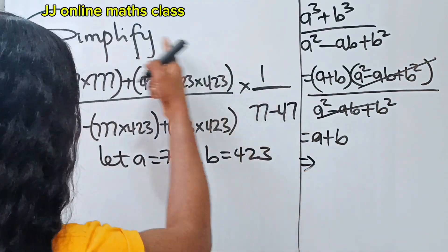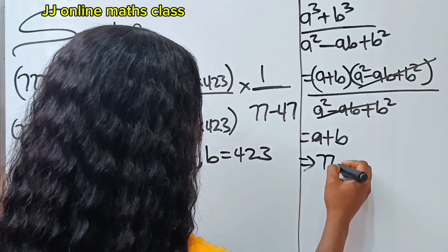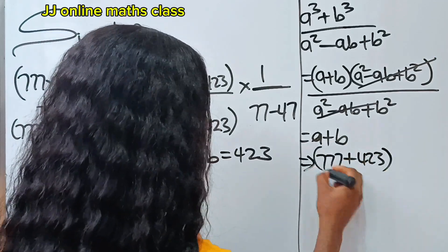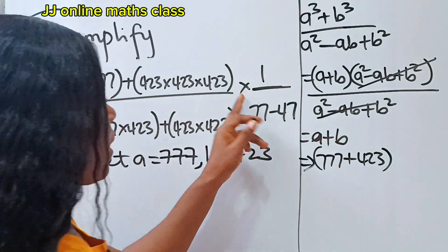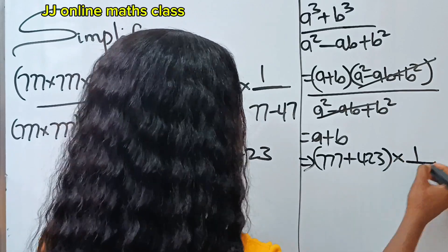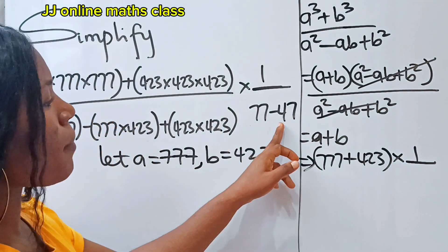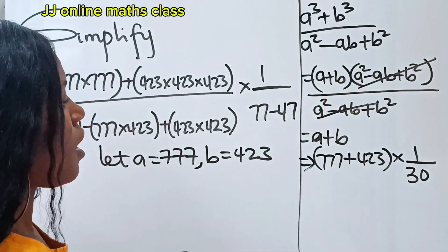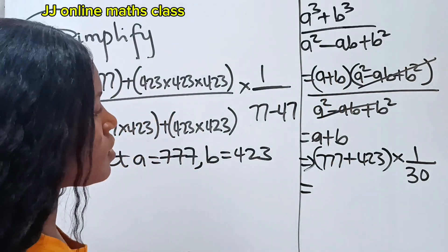So this implies that the whole of this is 777 plus 423, multiplied by 1 over... now 777 minus 747 is what? 30. So this is equal to what?